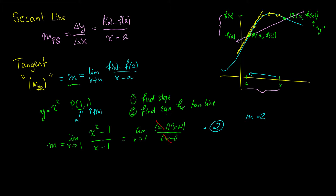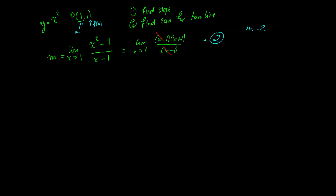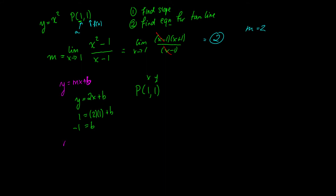Now what does the equation for a tangent line look like? It looks like y = mx + b. We know m = 2, so y = 2x + b. To find b, we use the given point (1, 1): plug in x = 1, y = 1, giving 1 = 2(1) + b, so b = -1. Therefore the tangent line equation is y = 2x - 1. At the point (1,1), the tangent line equation is 2x - 1.